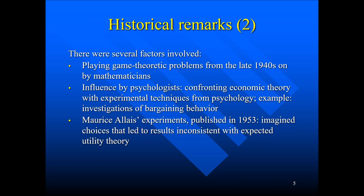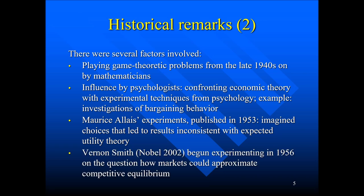Then there is the famous French economist Maurice Allais, who also earned the Nobel Prize. What he published in 1953 became a very important tool for experimental economics: a discussion of imagined choices. In Allais' paradox of 1953, these imagined choices led to results inconsistent with expected utility theory, the backbone of microeconomics. And finally, Vernon Smith, who earned the Nobel in 2002, began experimenting in 1956 on the question of how markets could approximate competitive equilibrium. These were four very important factors influencing the emergence of experimental economics.